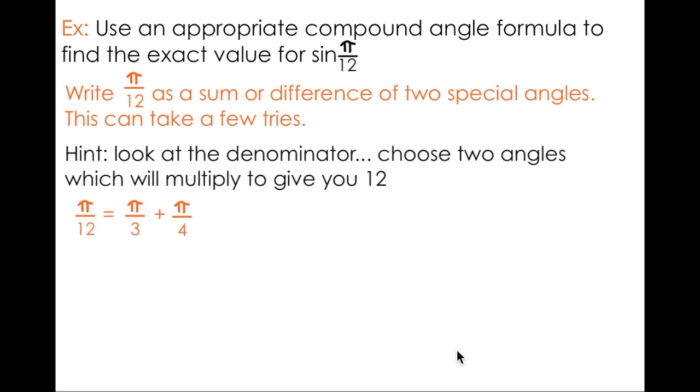For example, 3 and 4. So, you try pi over 3 plus pi over 4. You find a common denominator. Ooh, look, 12. And try addition.